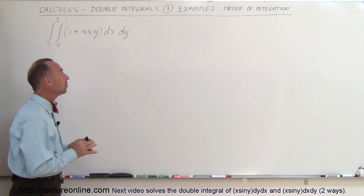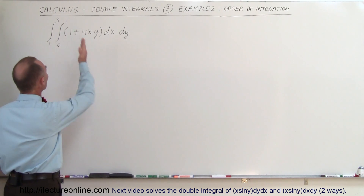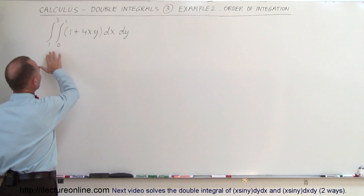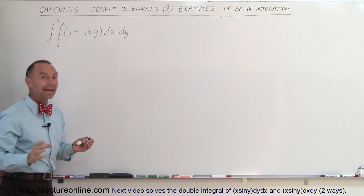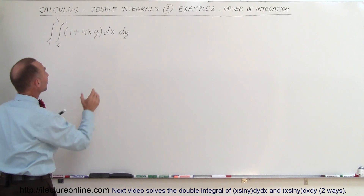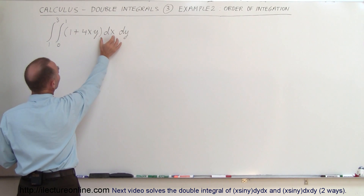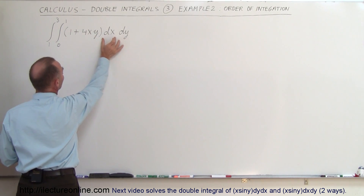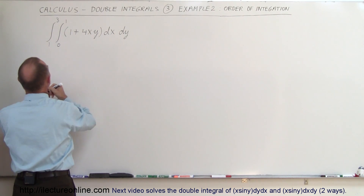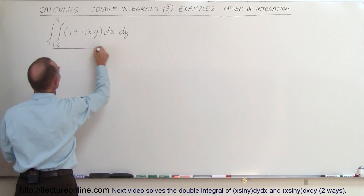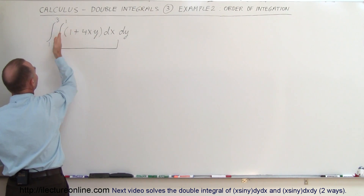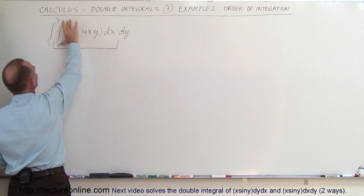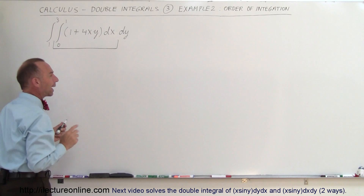We need to understand the convention in the order of the integral signs. Here it doesn't seem clear as to which limits belong to x and which to y. The convention typically is that whichever differential you put first, that has to be associated with the integral sign right here. So dx is associated with the second integral sign, making those x limits and the others y limits.